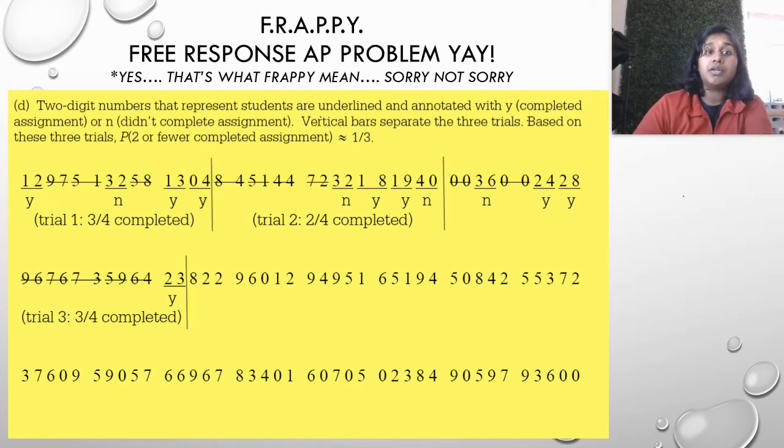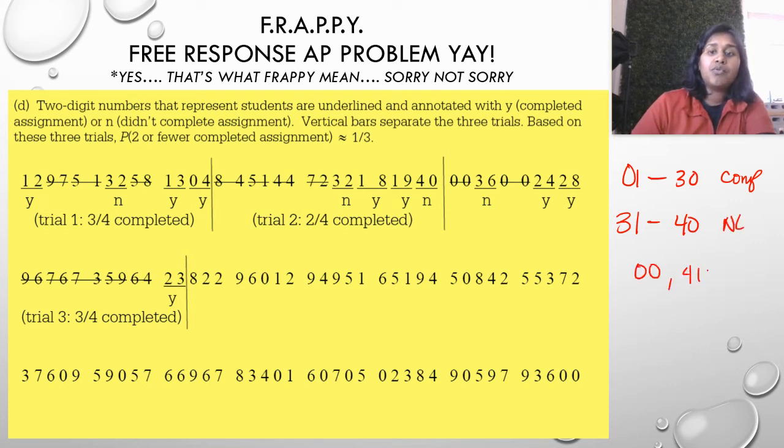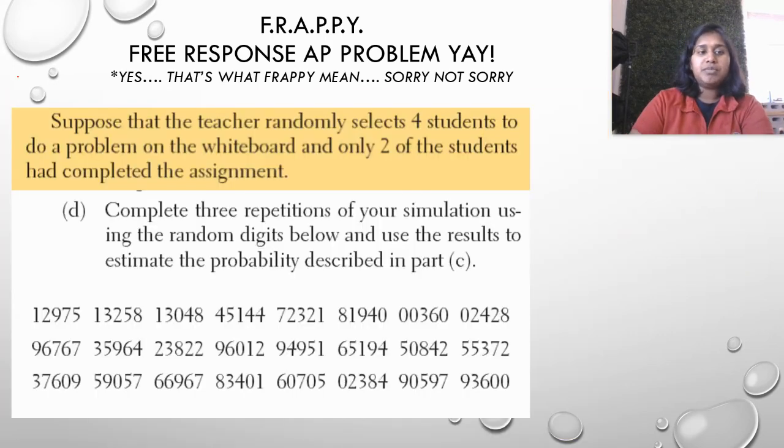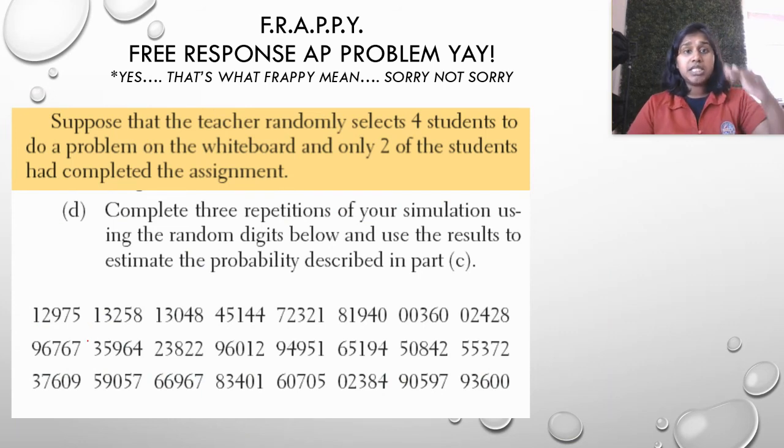So completing three repetitions, and that's the number of trials that they want us to do, we're going to do using this part of the table of random digits. So if you notice, two digit numbers that represent students are underlined. So that means I started on the left and I went, that's a two digit number. We can use the number 12. Why did I say the number 97 doesn't work? Well, because we are ignoring the number 00 and then 41 through 99. So I can't even use this number. That's what they're telling us. If it's annotated with a Y, that means they were the numbers 01 through 30. That meant completed, right? If it's annotated with a no, that means there's number 31 through 40. They didn't complete. If it's number 00 or 41 through 99, they're going to have a cross out. I'm going to make it even easier and I'm going to cross them out with my red.